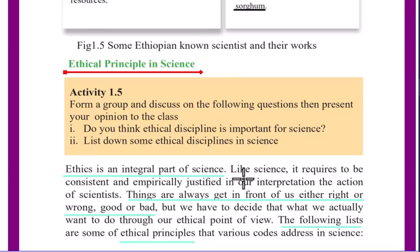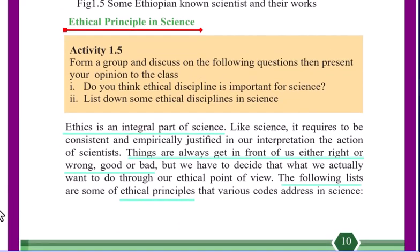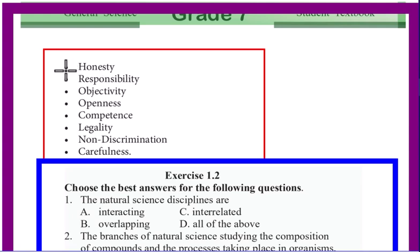Like science, it requires being consistent and empirically justified in our interpretations — these are the actions of scientists. As a scientist, there are ethical principles that govern science. These principles guide us in deciding what is right or wrong, good or bad. The following are some ethical principles that various codes address in science.